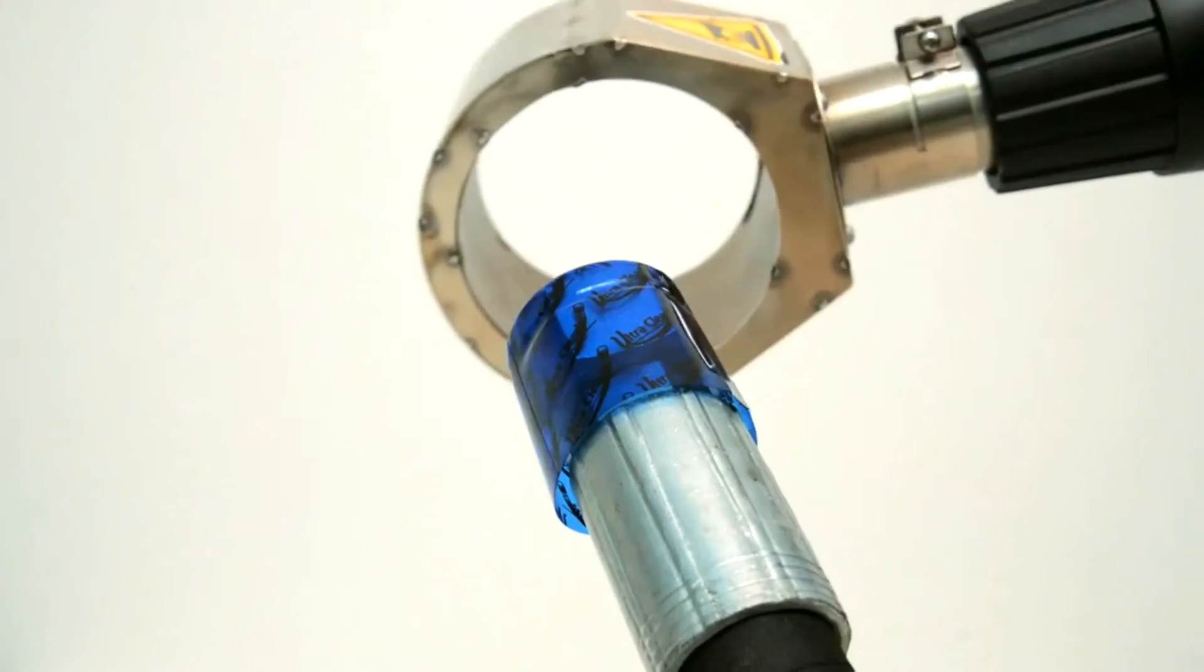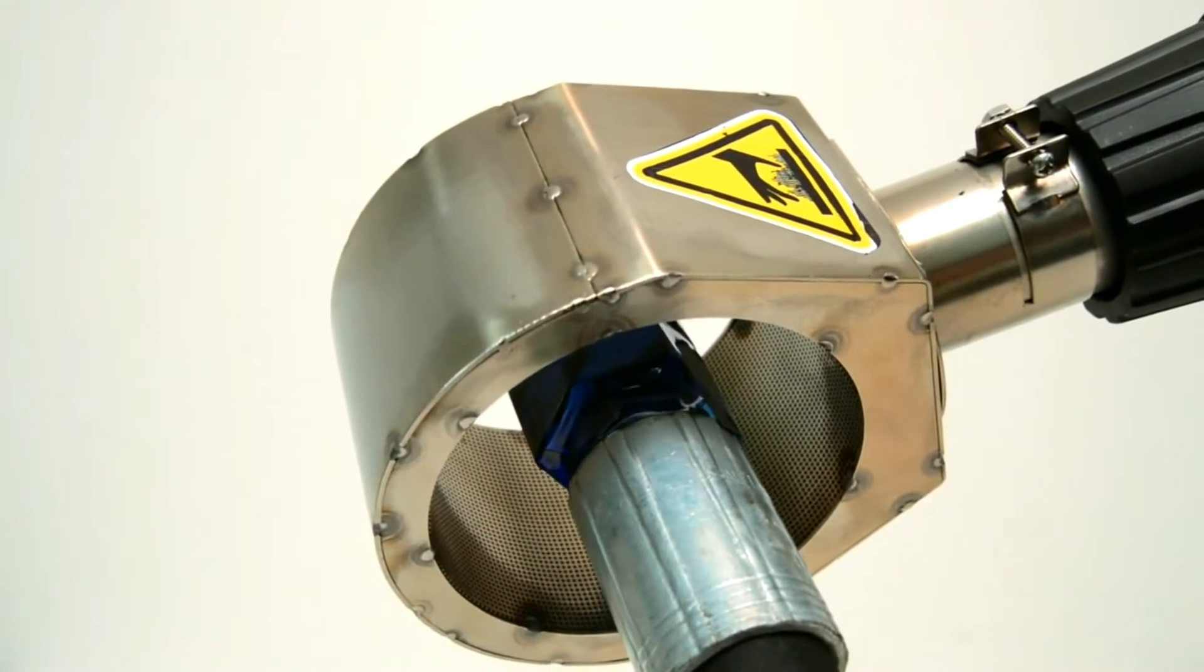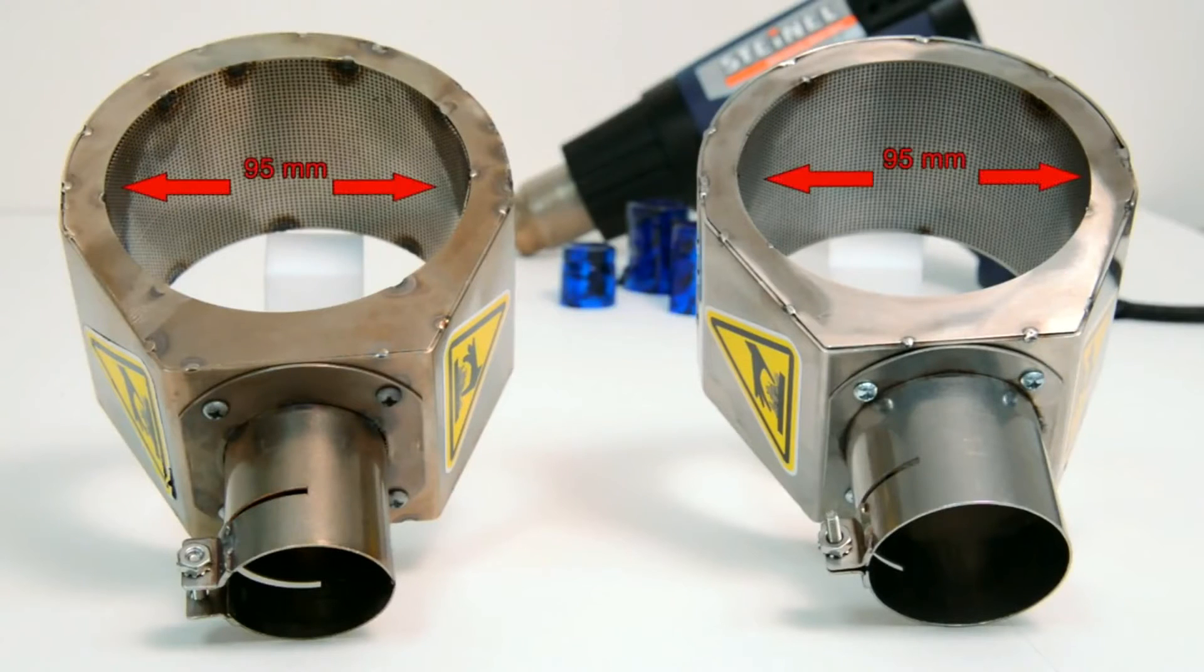The heat shrink gun and diffuser can also be taken directly to the hose or tube if required. UltraClean offers 95mm ID diffusers to accommodate all CleanSeal capsule sizes.